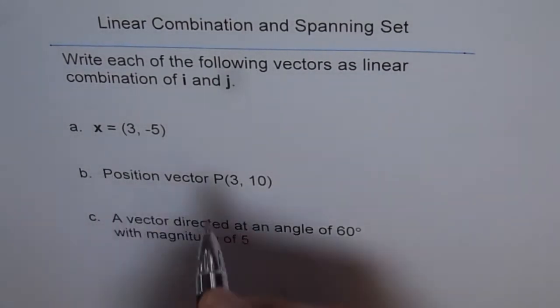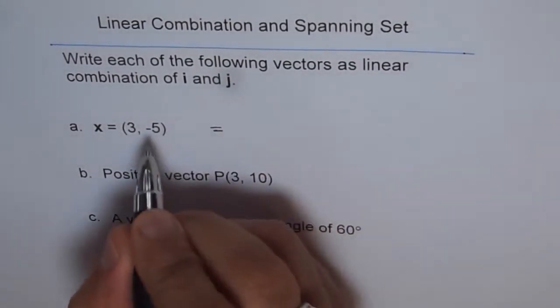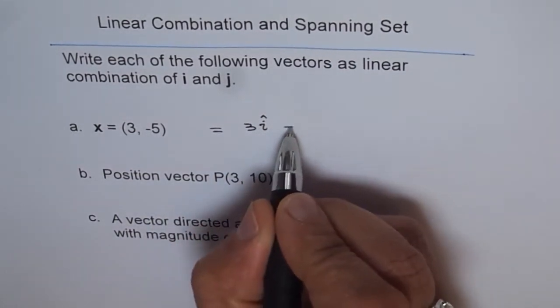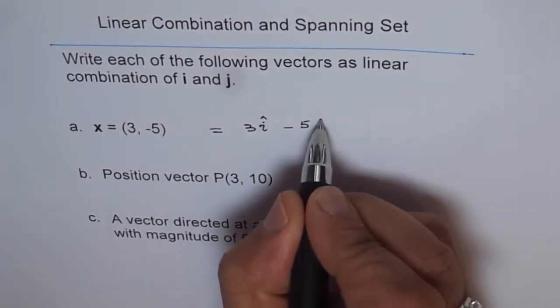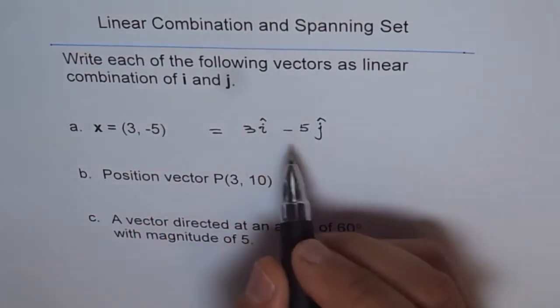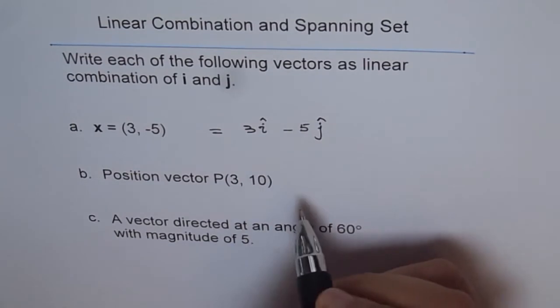So the vector x equals 3, 5 can be written as 3i minus 5j. Vectors you can either write them bold or with this kind of a superscript or with a bar and arrow.